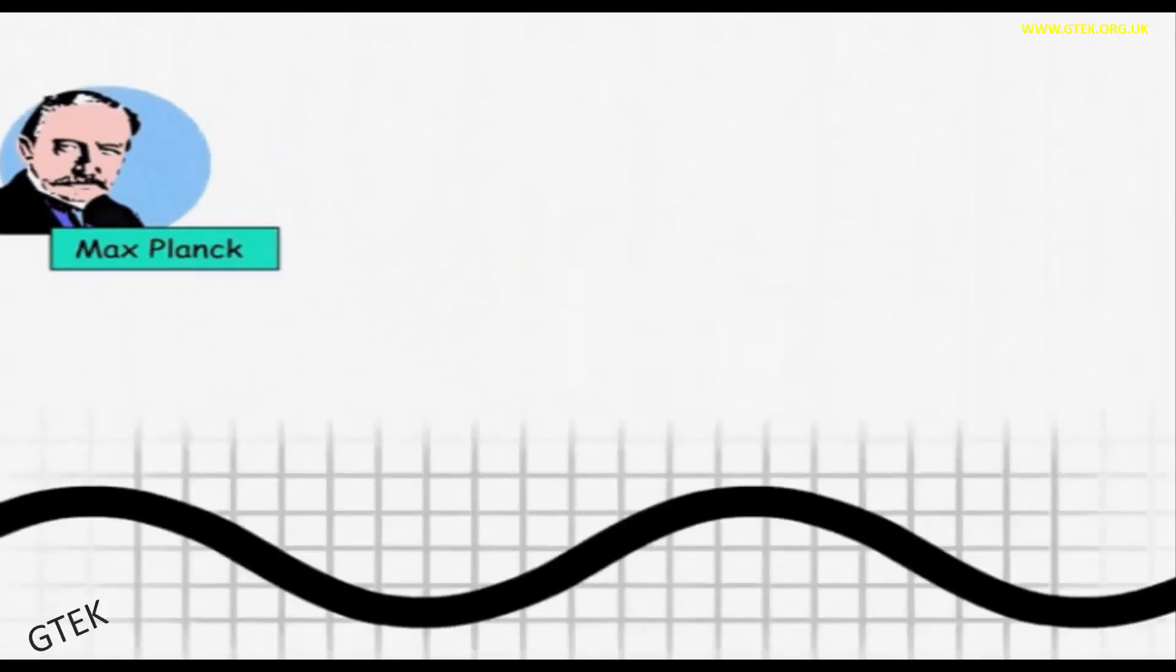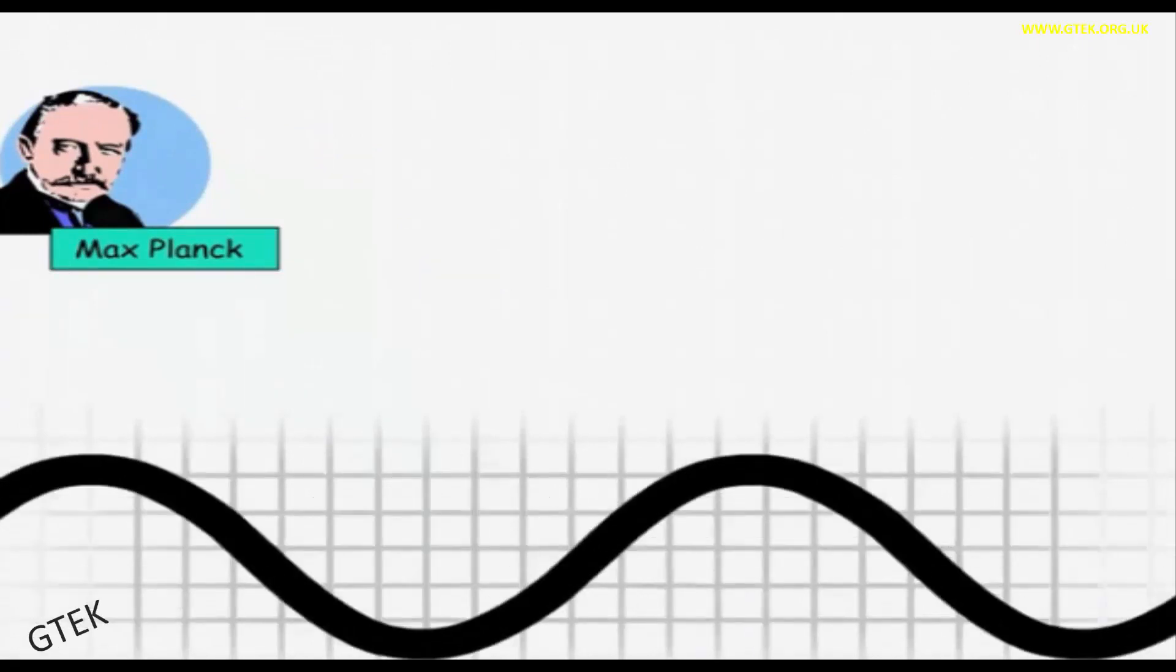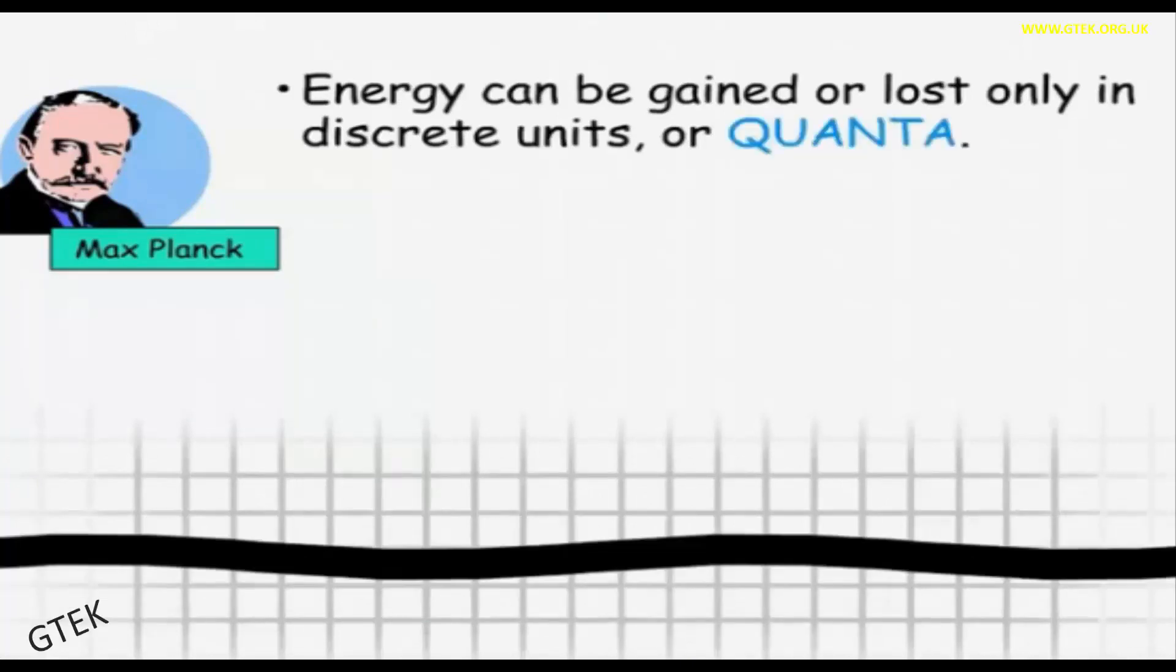According to Max Planck, energy can be gained or lost only in discrete units, or quanta.